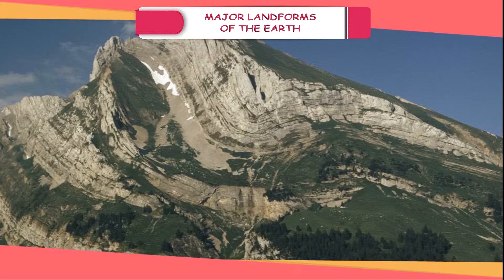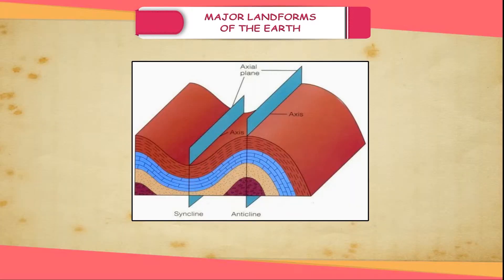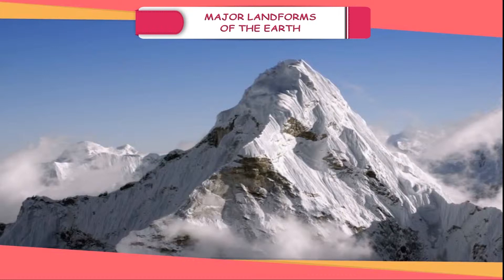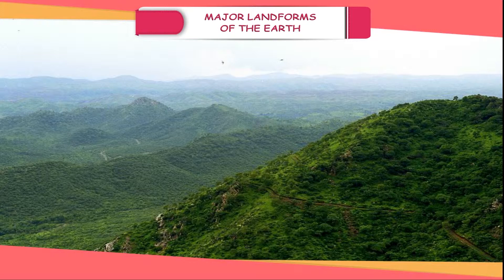Fold mountains are formed by the horizontal forces of compression. Due to compression, the horizontal rock strata crumble into a series of upward and downward folds called anticlines and synclines respectively. As most of these mountains are formed in the recent period of geological history, they are also called young fold mountains. The Himalayas of India and the Rockies of North America are some examples. The Aravalli Range in India is one of the oldest fold mountain systems in the world.